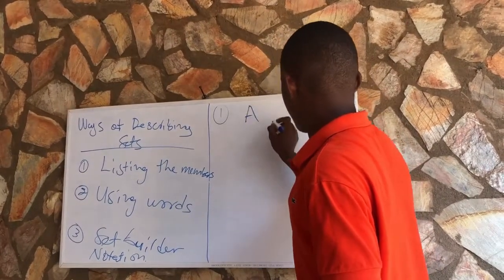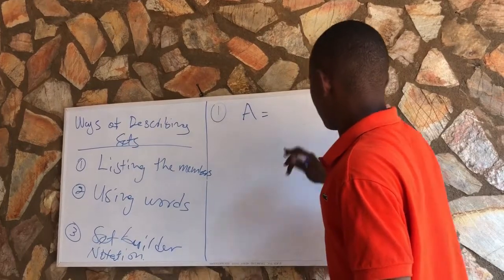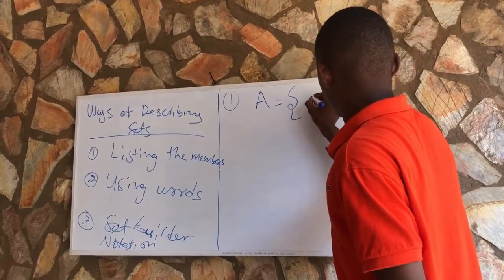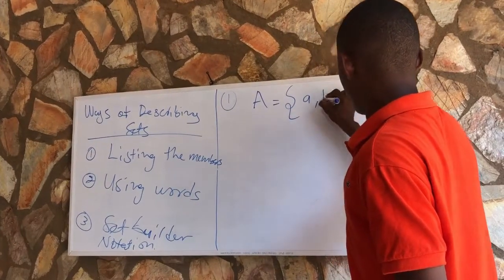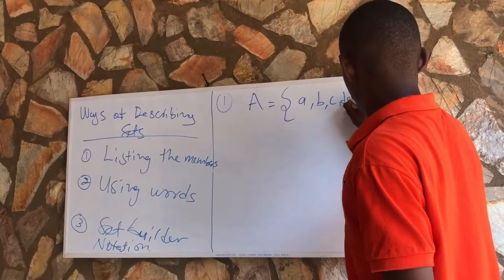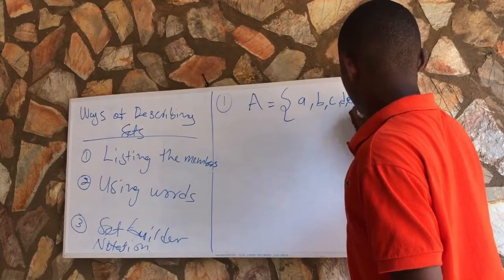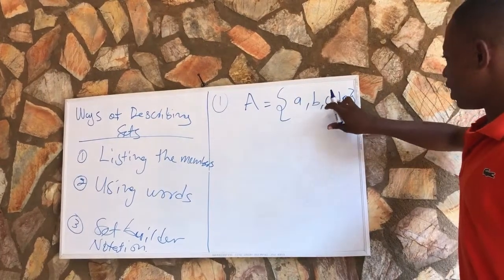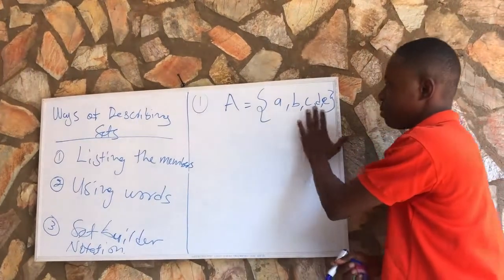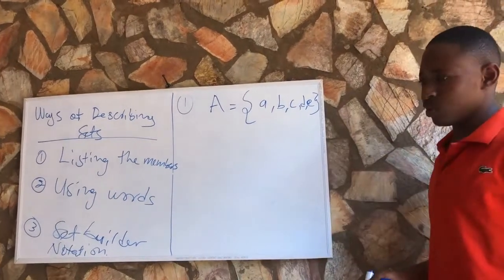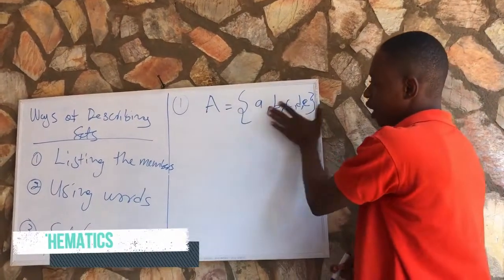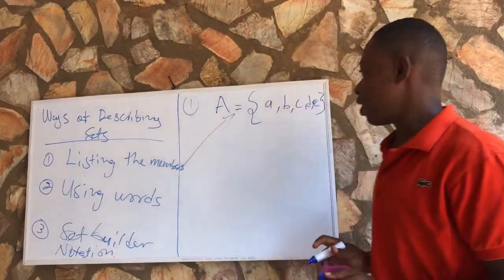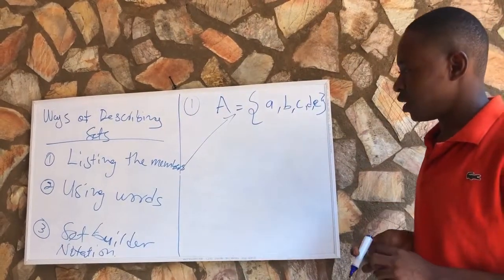we have Set A. The members of Set A are A, B, C, D, E. So Set A is equal to {A, B, C, D, E}. We've listed the members of the set, so we've described the set by listing its members.